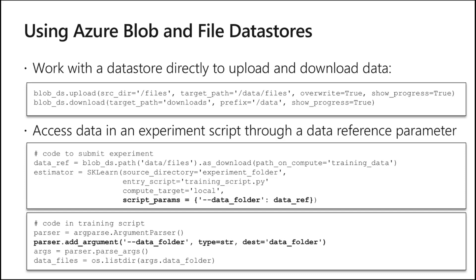When executing a training script from your laptop but running it in the cloud, you need to specify where the data is available. You pass a data reference — for example, download `data/file` into a folder called `training_data` on the remote compute. In your code, you use pandas to read from `training_data/some_file_name`. These snippets appear in certification labs and will be used repeatedly.